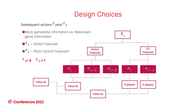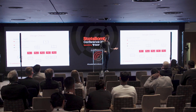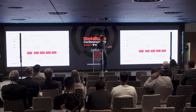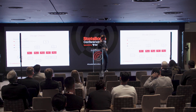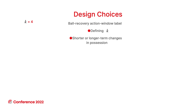That's why we divide the game state into two parts: the first with action features, which has a size of three, and the second with pitch control features, which has a size of one. The last design choice is about the action window label K — the trade-off between shorter or longer-term possession exchange. We found that K equal to four was best.